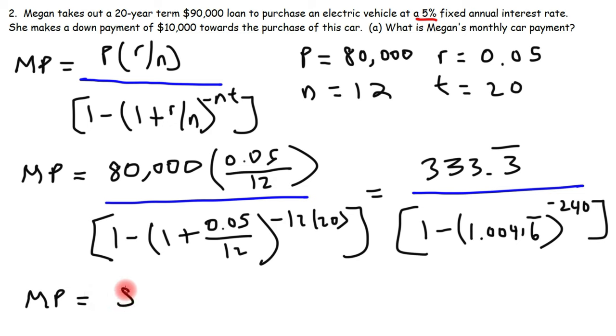So the monthly payment that I got is $527.96. So that's how much Megan is going to have to pay each month for 20 years in order to pay back this particular loan.